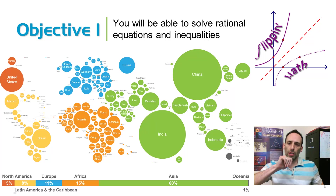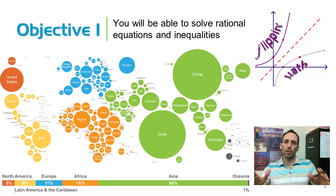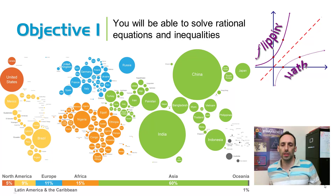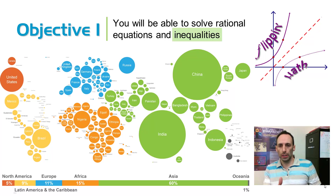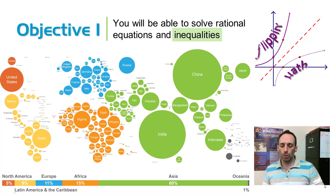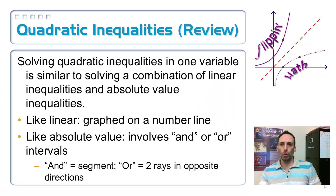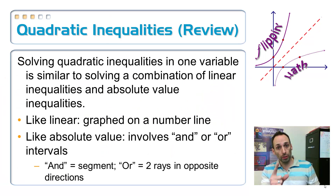Here is the final part of this objective for this lesson: being able to solve rational inequalities. Let's flash back a little bit and review how to solve quadratic inequalities, because they're going to be very, very similar.